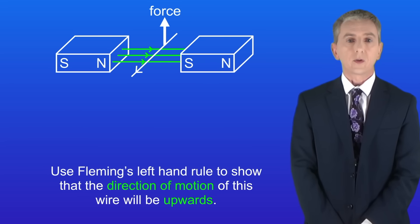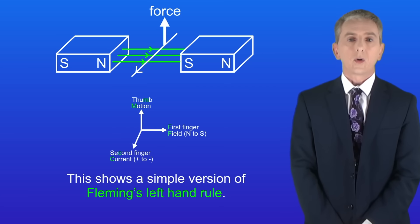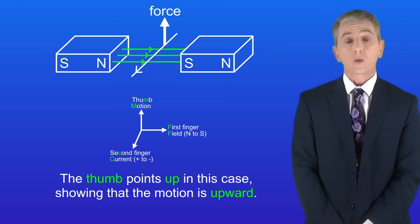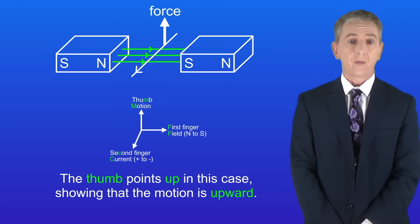I'd like you to use Fleming's left hand rule to show that the direction of motion of this wire will be upwards. Pause the video now and try this yourself. Okay, this shows a simple version of Fleming's left hand rule and we can see that the thumb points up in this case, showing that the motion is upward.